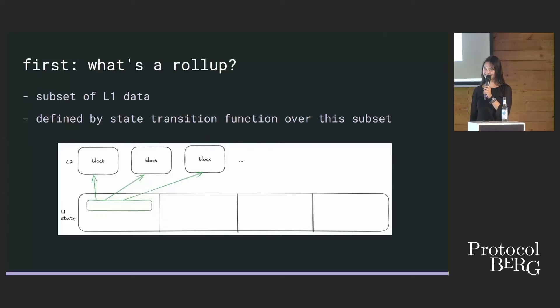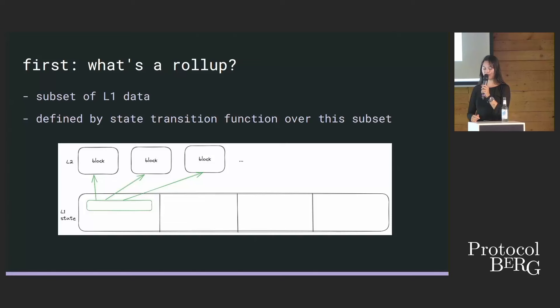So first of all, who knows what a rollup is? I'm going to define it as a subset of the L1 data that's defined by a state transition function over this subset. Essentially, you post your data to an L1, you have your rollup node which contains the rollup state transition function, and that rollup node reads the data from L1 and executes based off that data. I will not mention optimistic or ZK rollup stuff here because that is not currently relevant.